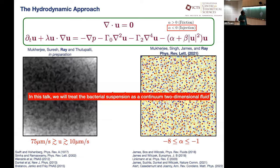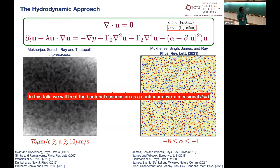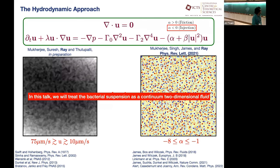In this talk, we will treat this bacterial suspension — from our experiment — as a continuum two-dimensional fluid satisfying this equation. This is a solution of the equation for a given alpha, and visually they seem to show a very similar phenomena.